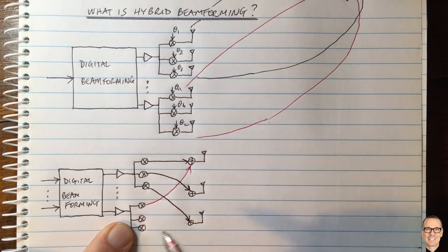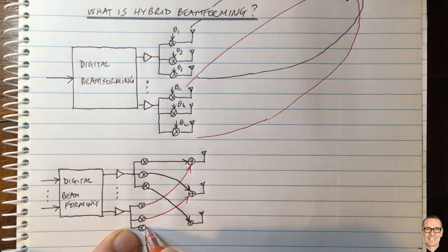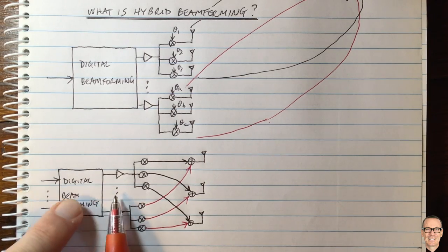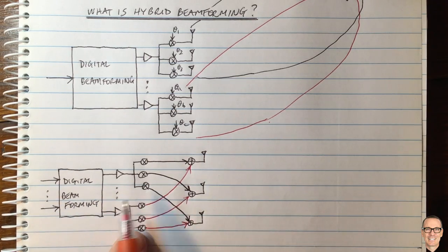The first output goes to the first antenna, second to the second, third to the third, and of course you can see if you had other amplifiers and other data streams here you can have this fully connected structure.